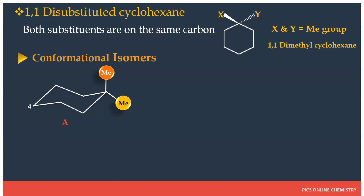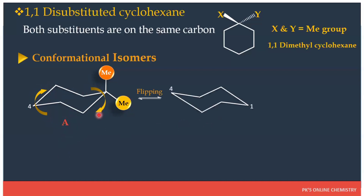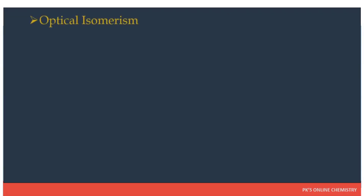If we flip this conformation, we get another conformation known as conformation B. To convert conformation A into conformation B, we rotate the C4 carbon atom in the upward direction and the C1 carbon atom in the downward direction. This phenomenon is known as flipping of the conformation. As a result of flipping, the axial bonds become equatorial and the equatorial bonds become axial — flipping is the conversion of one chair form into another, and the positions of the substituents are inverted.